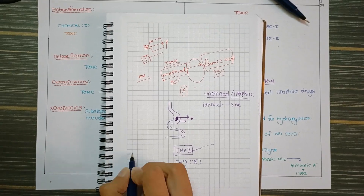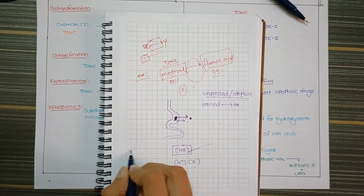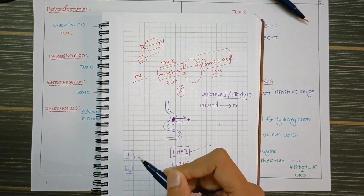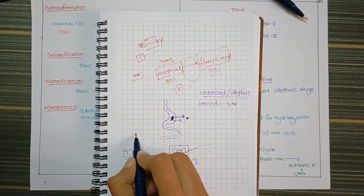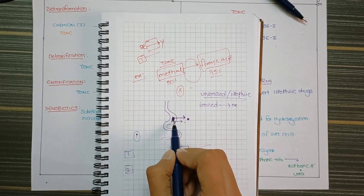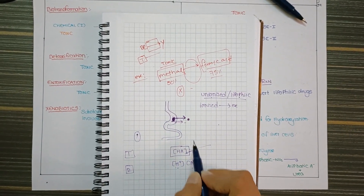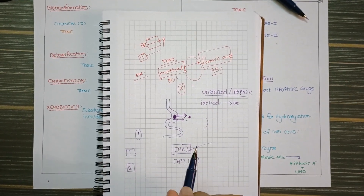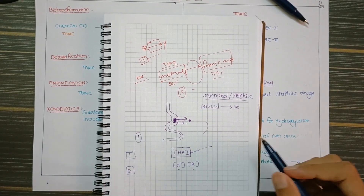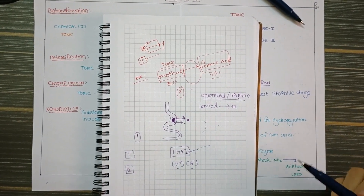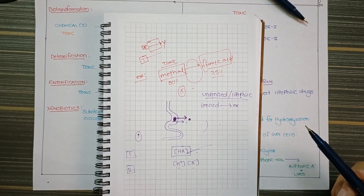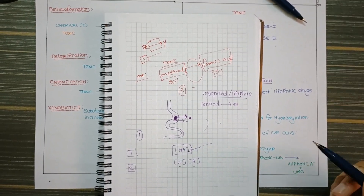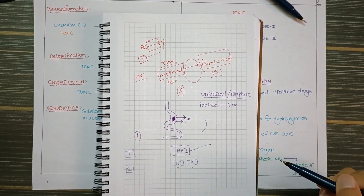Now we have phase 1 and phase 2 reactions. The main motive of phase 1 and phase 2 reactions is: the drug enters your body in a unionized, lipophilic formula, and we want to convert it to a water-soluble form so it can be excreted. A drug's structure is altered to make it water soluble so it can cross membranes or be excreted.